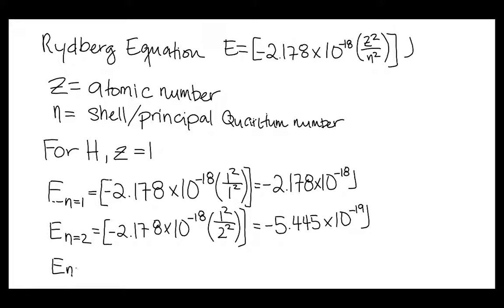We can go another step further and look at the n equals 3 level, which gives us now a value of negative 2.420 times 10 to the negative 19 joules.